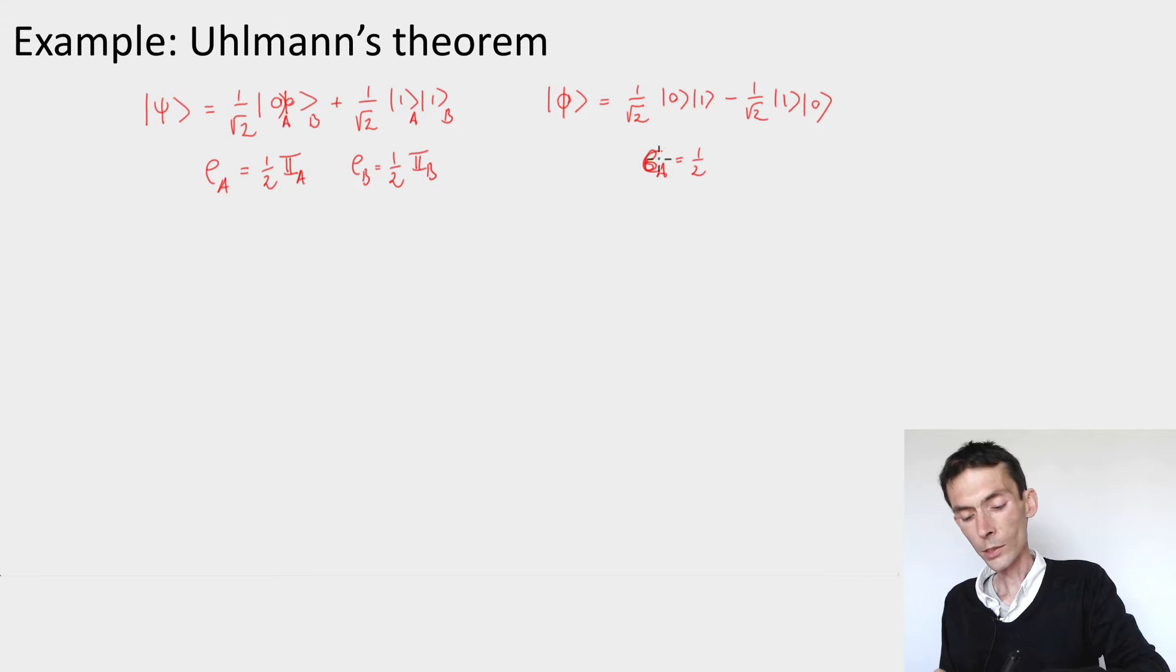Let's call the reduced density sigma, half identity, and sigma B. So they have exactly the same reduced density matrices on both systems, but the states are very different. You can compute the inner product between psi and phi and you get zero.